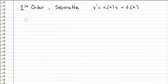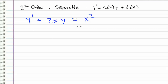So the last example I want to consider is y prime plus 2xy is equal to x squared. Again, we see that we have an a of x of 2x and a b of x of x squared, so we're dealing with a non-constant coefficient first order differential equation.